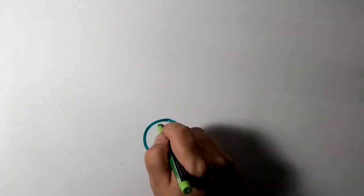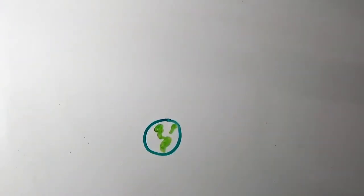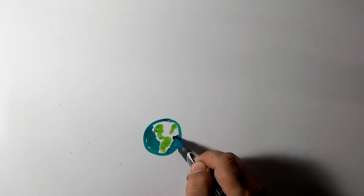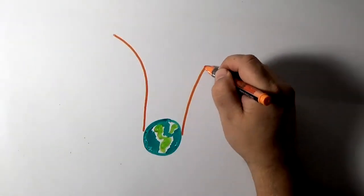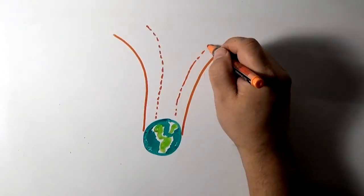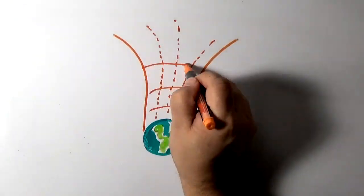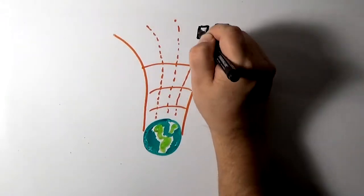Remember that general relativity tells us the Earth sits at the bottom of a gravitational well, a warped dimple it creates in space-time. Our GPS satellites sit high up in the well, where space-time is less warped.